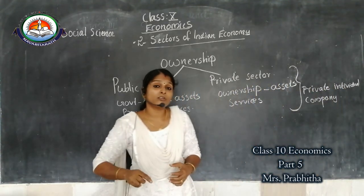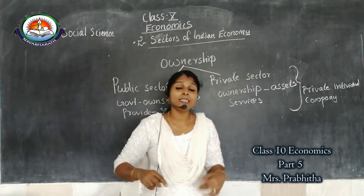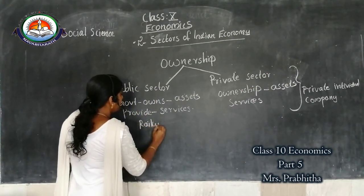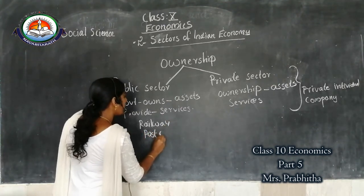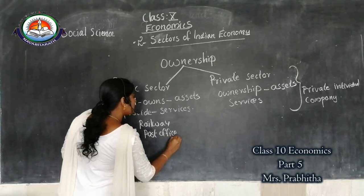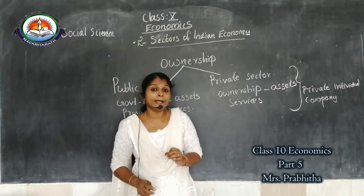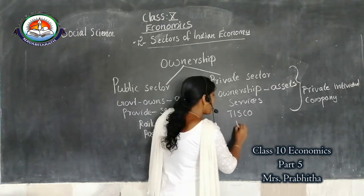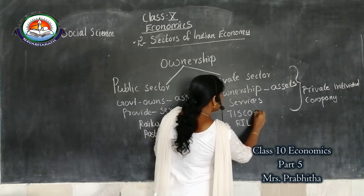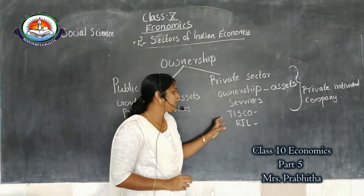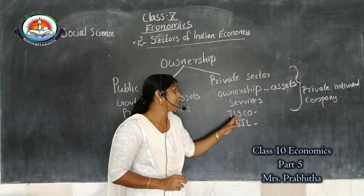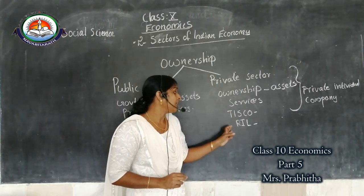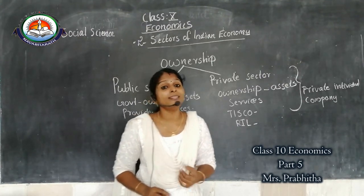What are the examples of public sector? The examples of public sector are railway, post office, etc. And the examples of private sector are TISCO and RIL. The full form of TISCO is Tata Iron and Steel Company Limited, and RIL stands for Reliance Industries Limited.